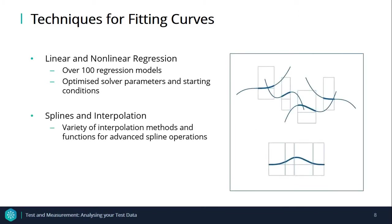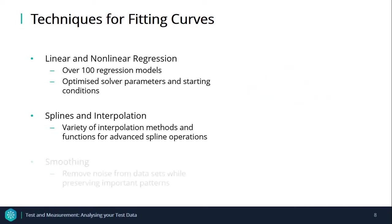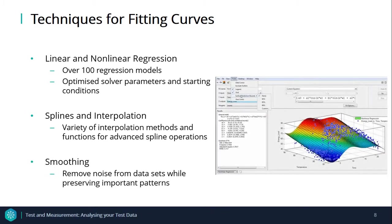B-splines, thin plate splines, and tensor product splines are some of the interpolation methods. Some of the advanced operations are break or knot manipulation, optimal knot placement, and data point weighting. Smoothing algorithms are widely used to remove noise from a dataset while preserving important patterns, and it supports both smoothing splines and localized regression.